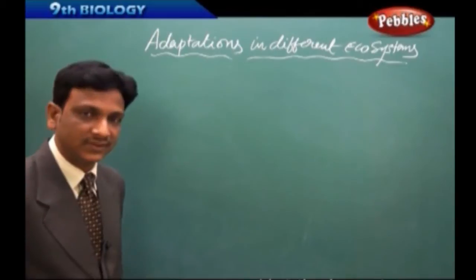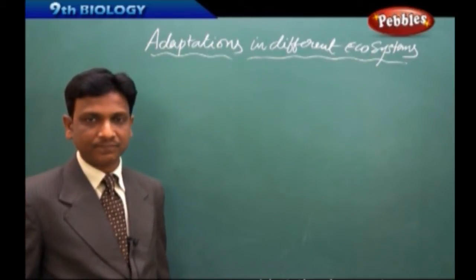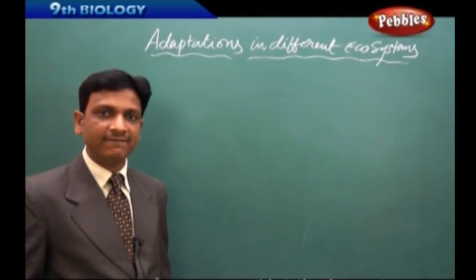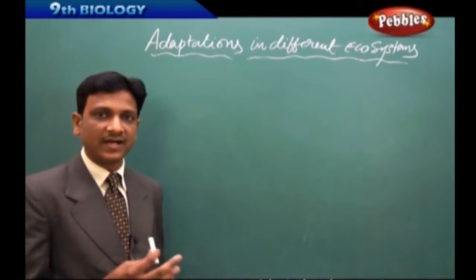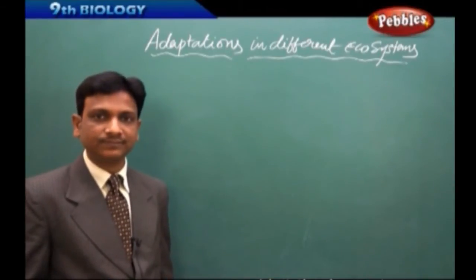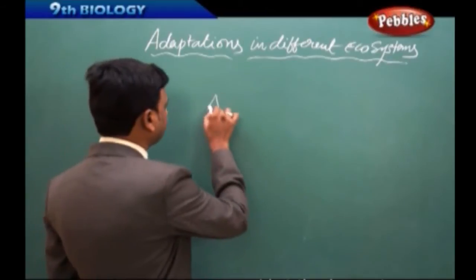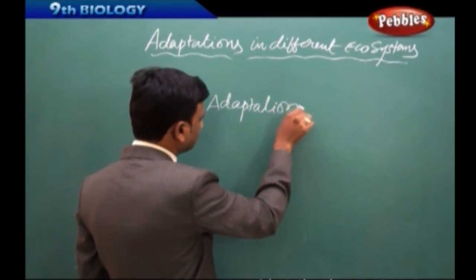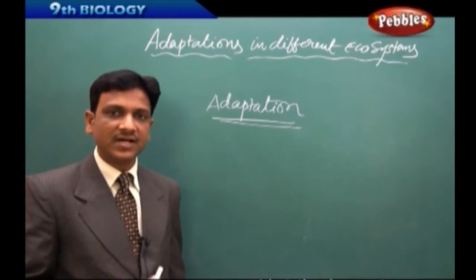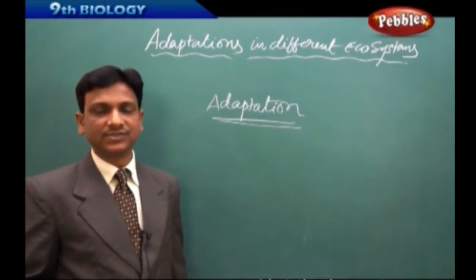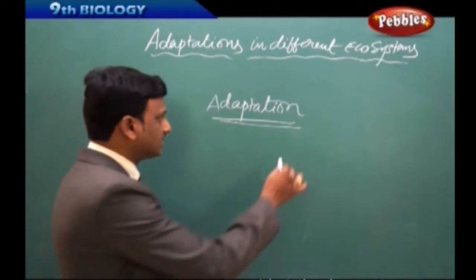We are going to learn how an organism is able to live in a particular ecosystem — in a particular habitat. A habitat is the natural living place of an organism. To fit well in its habitat, to withstand the adverse conditions of that ecosystem, an organism will adapt some features. That is called adaptation. These adaptations are shown by different plants and animals to withstand the special conditions of their habitat.